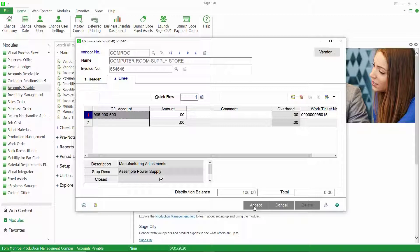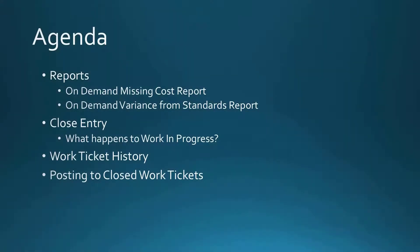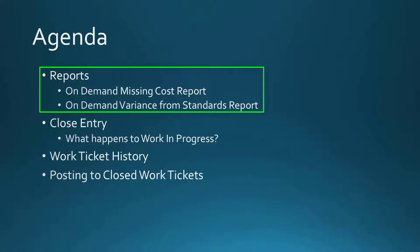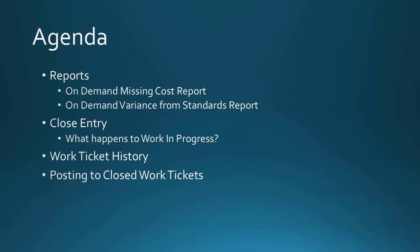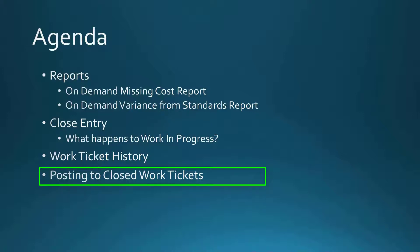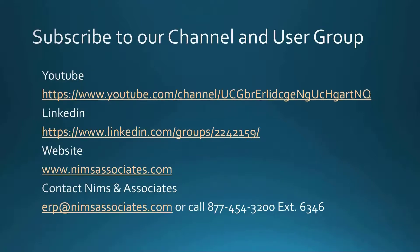In review, we talked about the on-demand missing cost report and the on-demand variance from standards report. We recommend that you print these reports prior to closing the work ticket — you will be prompted for it after you close, but it's better to know this information before you close. Make sure all the costs you want on the work ticket have been posted. When you close the work ticket, the dollars sitting in work in progress get moved to the work ticket variance account, the work ticket itself gets moved to work ticket history, and you can post to closed work tickets after they've been closed if you set it up to do so in work ticket class maintenance.